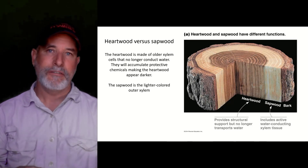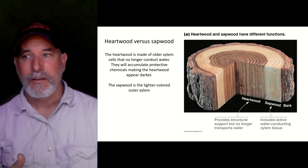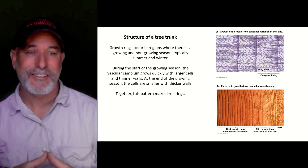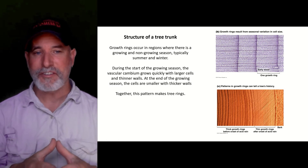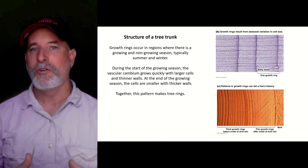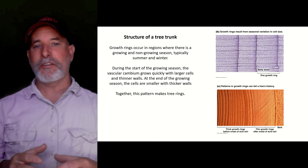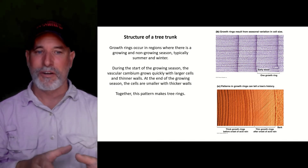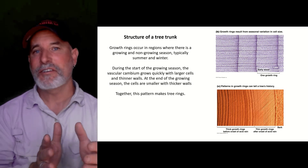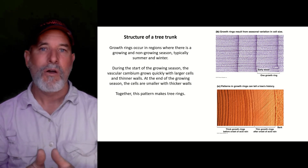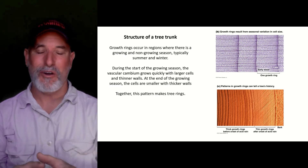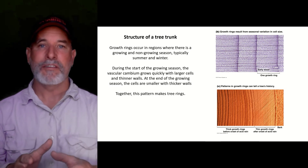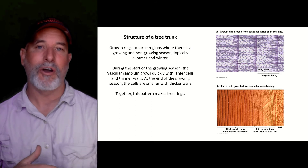The sapwood — the active part — is lighter in color. Trees in North America have rings, which is interesting. Tree rings form because of growing and non-growing seasons. During the growing season, the vascular cambium grows quickly, adding larger cells with thinner walls — the ring appears light. As the growing season ends, cells are smaller with thicker walls and appear dark, forming a tree ring.